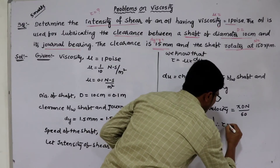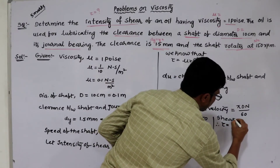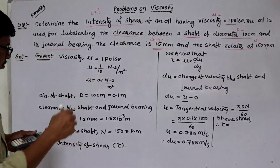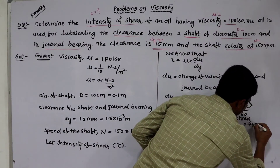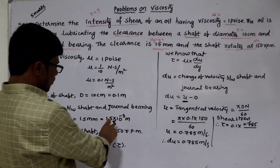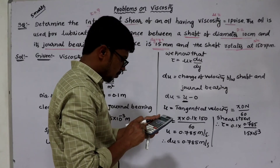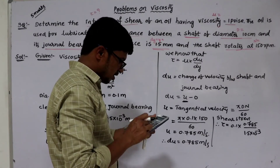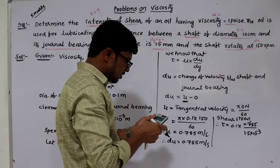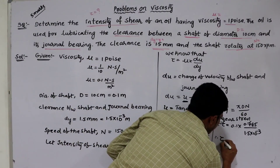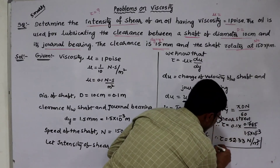Therefore, the shear stress (intensity of shear) is tau equals mu times du divided by dy. Substituting: mu equals 0.1, du equals 0.785, dy equals 1.5 times 10 to the power of minus 3. So: 0.1 times 0.785 divided by 1.5 times 10 to the power of minus 3 equals 52.33. Therefore, the shear stress (intensity of shear) is 52.33 Newton per meter square. This is the required answer.